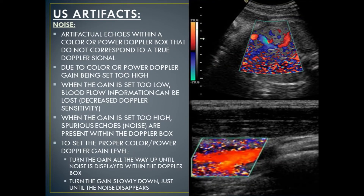Noise is the next type of ultrasound Doppler artifact. Noise is artifactual echoes within a color or power Doppler box that do not correspond to a true Doppler signal. This can be due to the color or power Doppler gain control being set too high. When the gain is set too low, blood flow information can be lost, which is decreased Doppler sensitivity. When the gain control is set too high, spurious echoes, or noise, are present within the Doppler box. To set the proper color or power Doppler gain level, turn the gain all the way up until the noise is displayed within the Doppler box, then turn the gain slowly down just until the noise disappears.